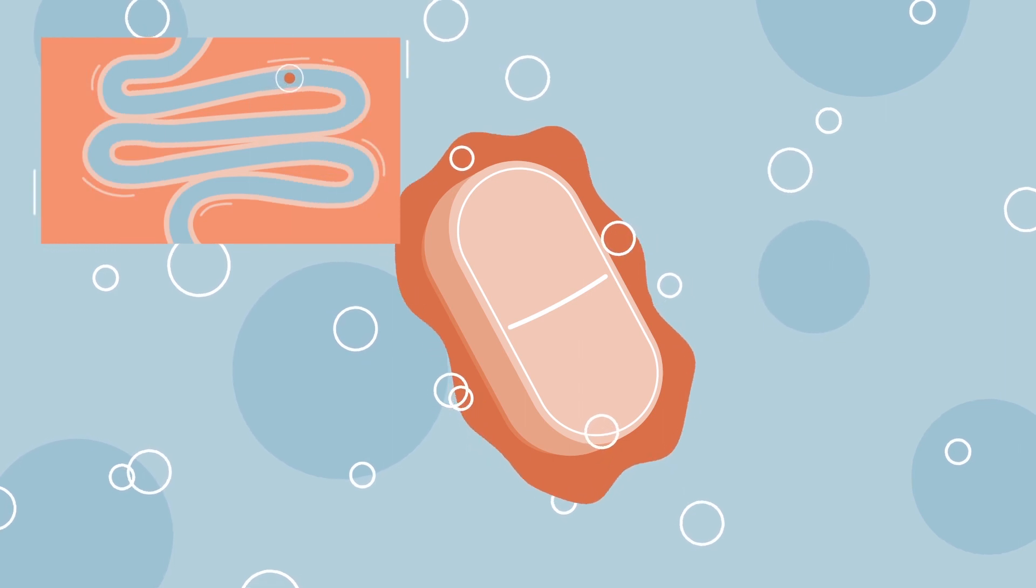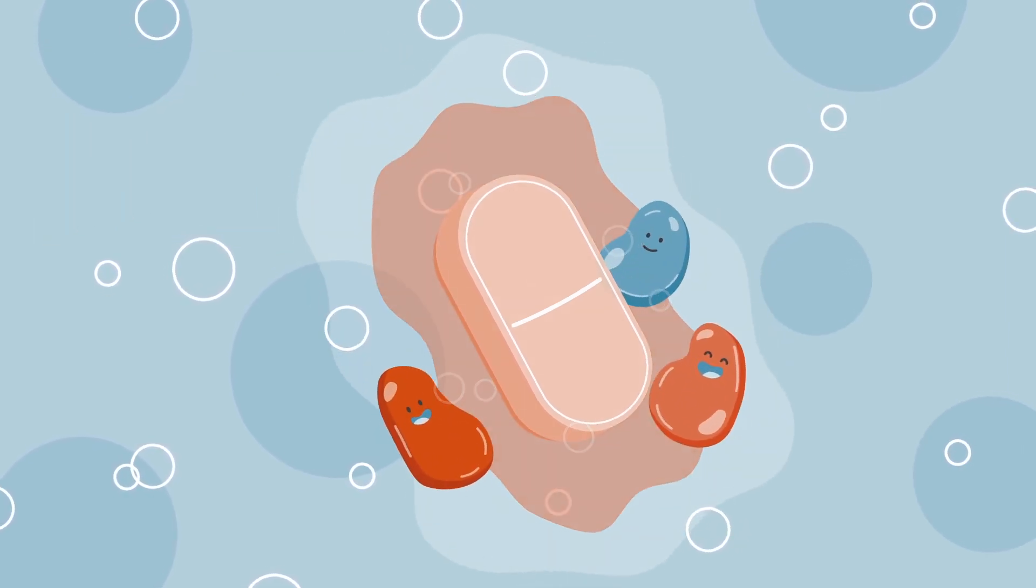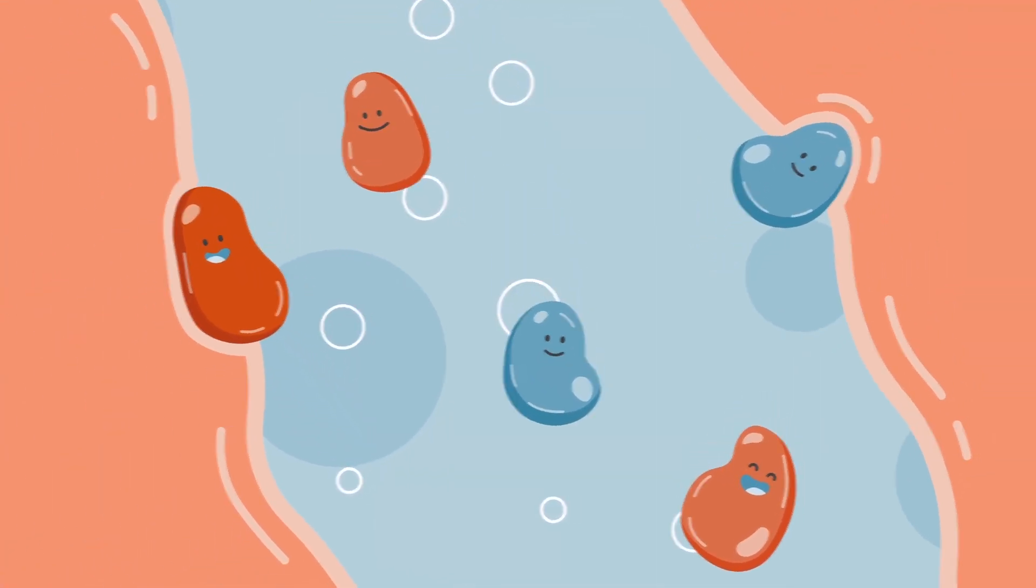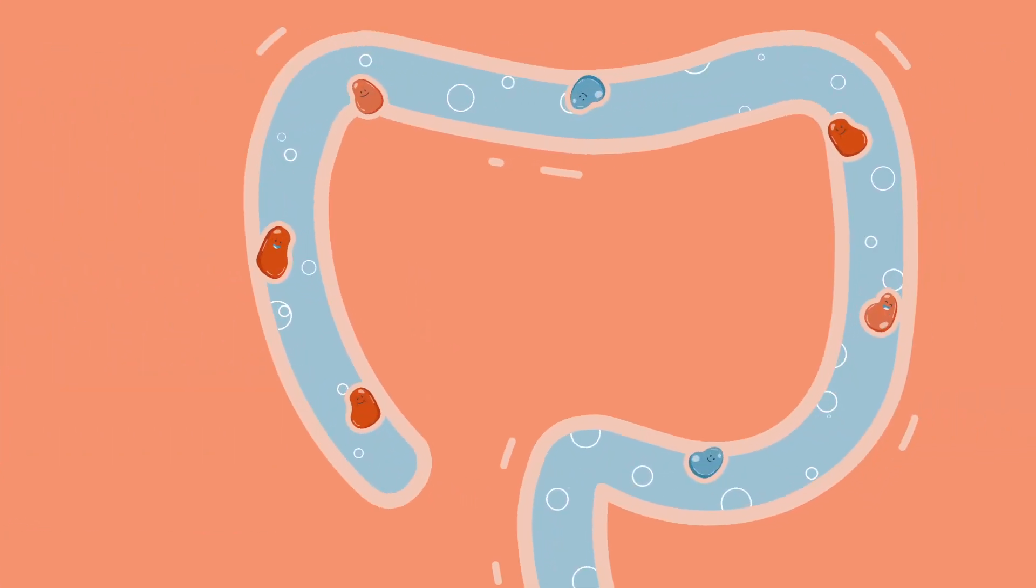And when they arrive, sustained release ensures probiotics exit the gel barrier slowly, finding their destination one spot at a time along the small and large intestine.